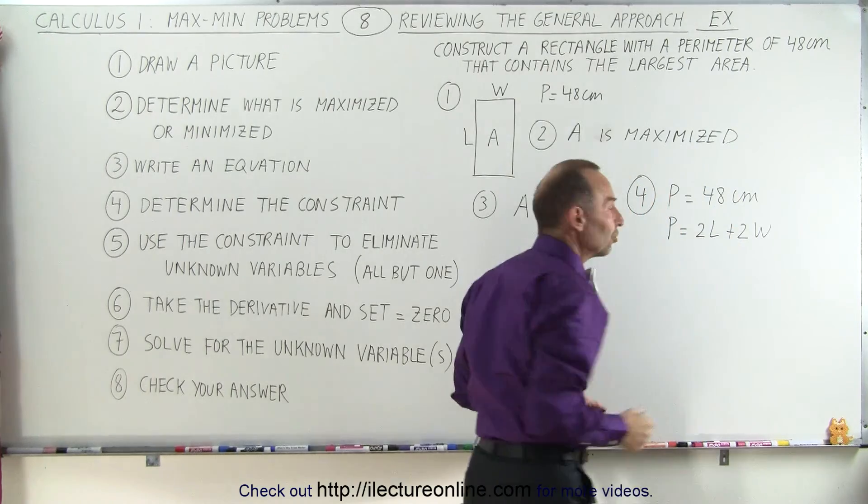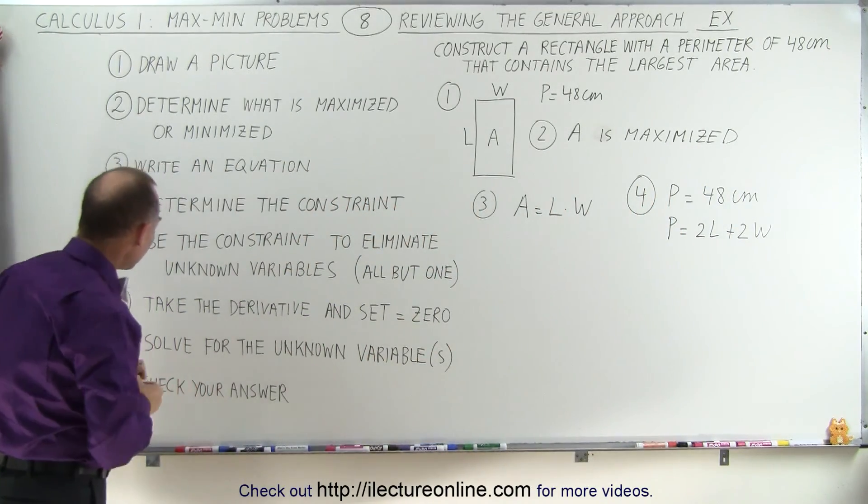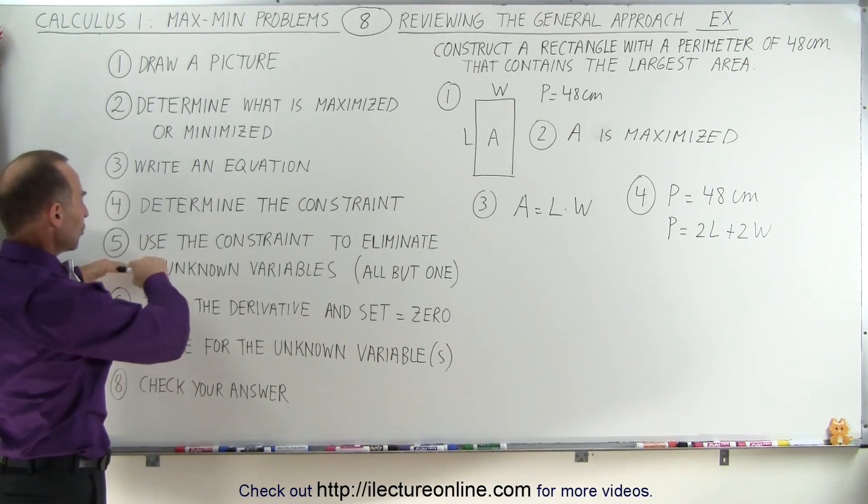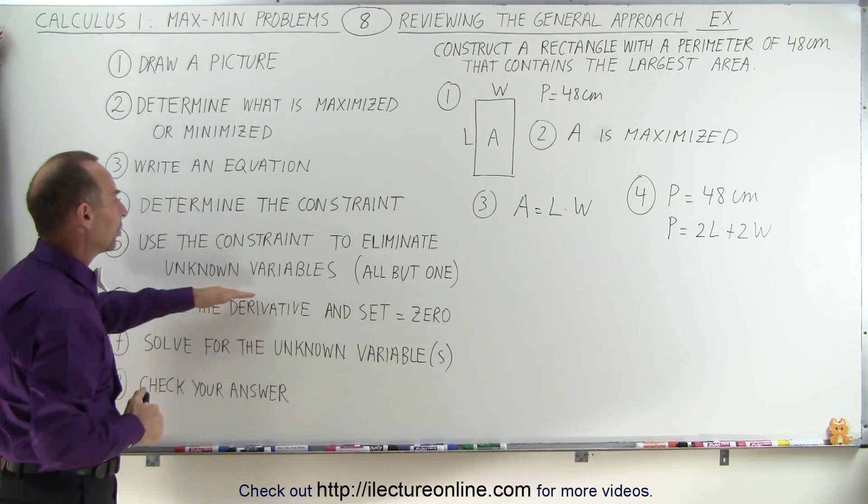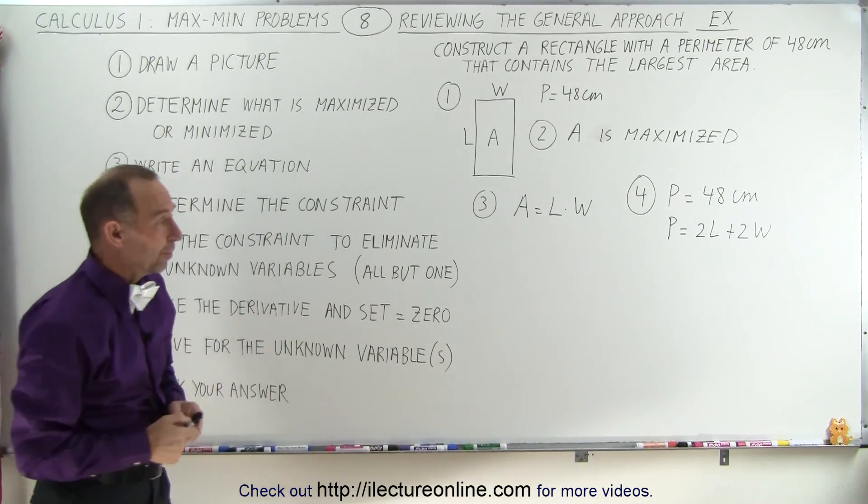So we're going to take this information and use it to eliminate one of our variables. That's step number five. We're going to use the constraint to eliminate all the unknown variables, all but one. So let's get rid of L or W, it doesn't matter.